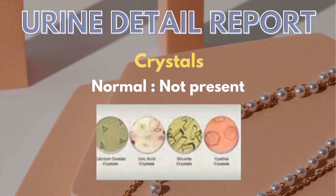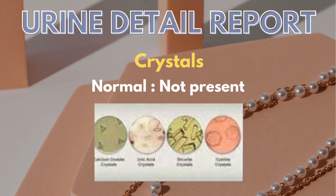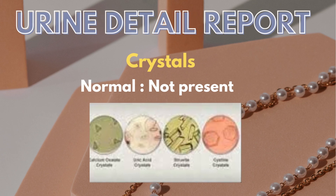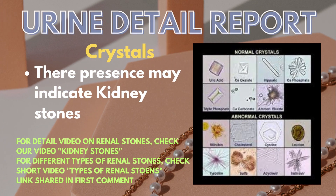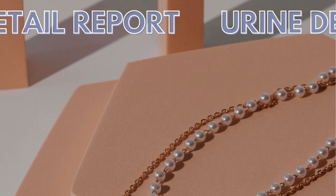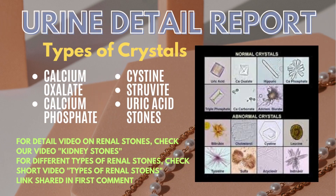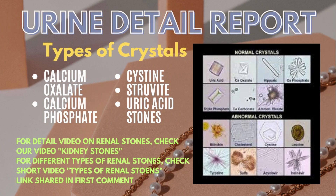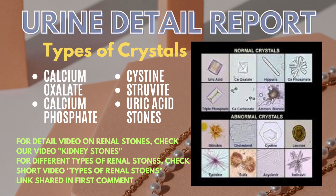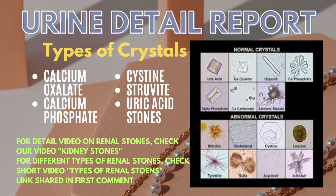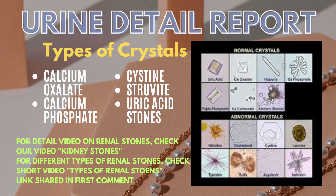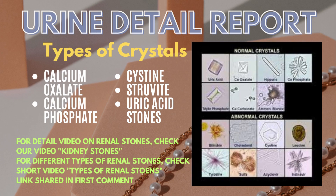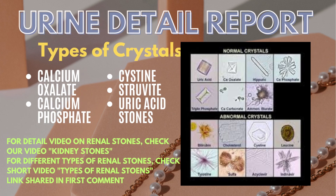Then comes crystals, which are also normally not present in urine, but their presence may indicate kidney stones. There are different types of crystals that can be found, including calcium oxalate, calcium phosphate, cysteine, struvite, or uric acid stones.